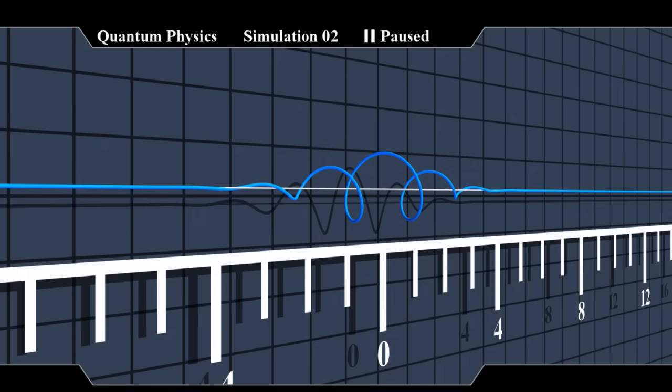The particle is more likely to be found at a position where the distance is high, so it's more likely to be found here. Less likely to be found here. And even less so here.